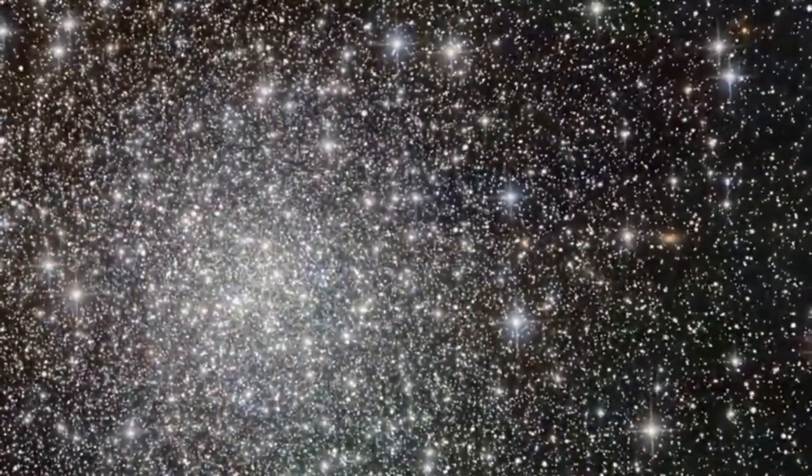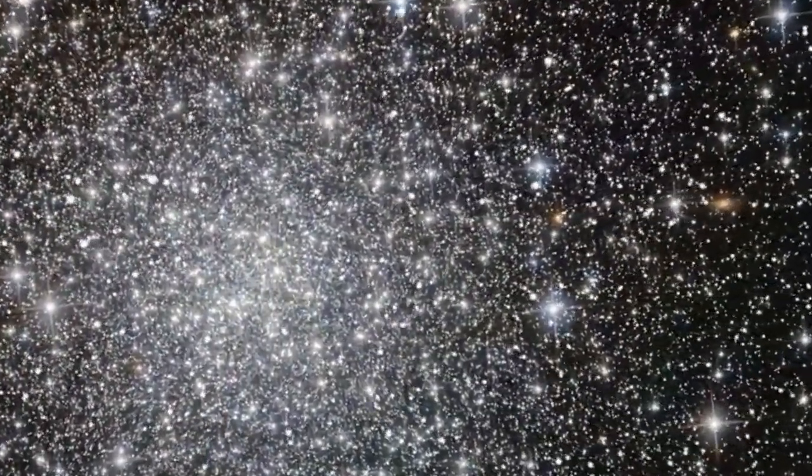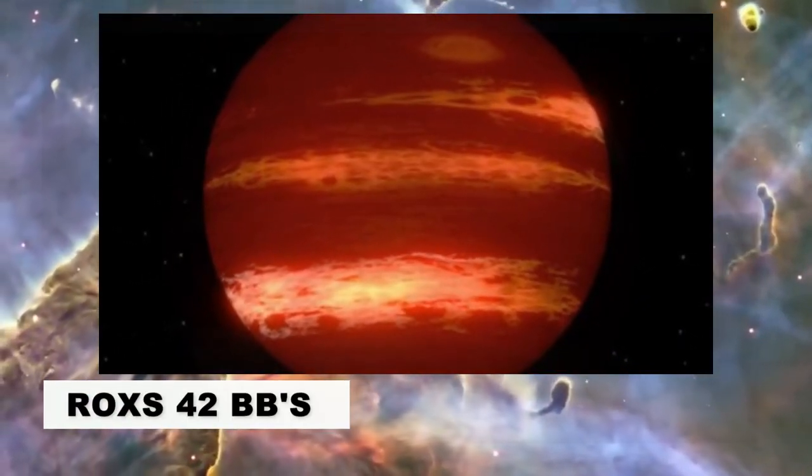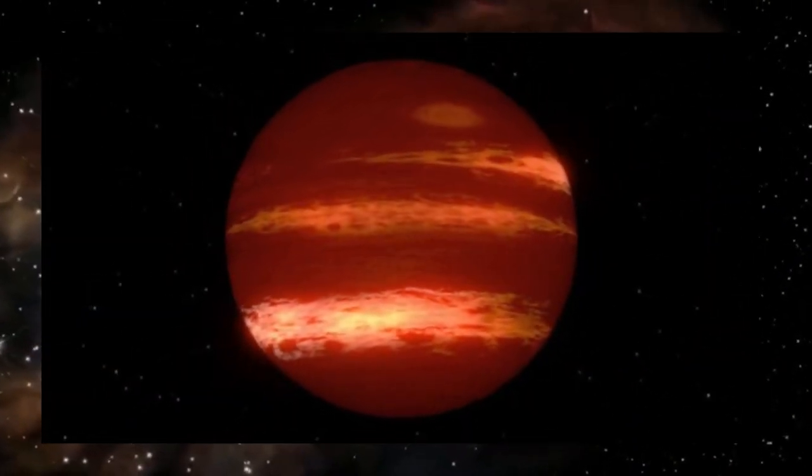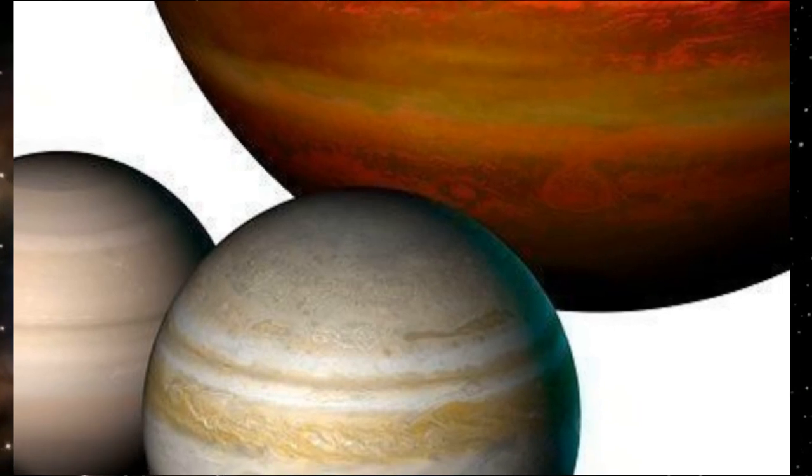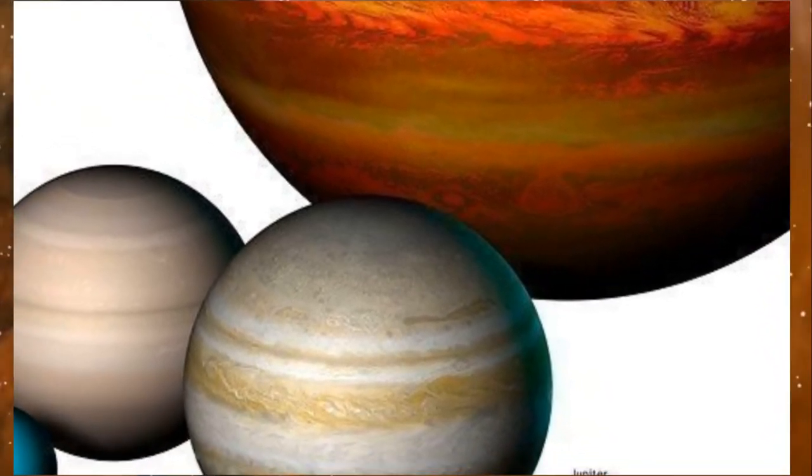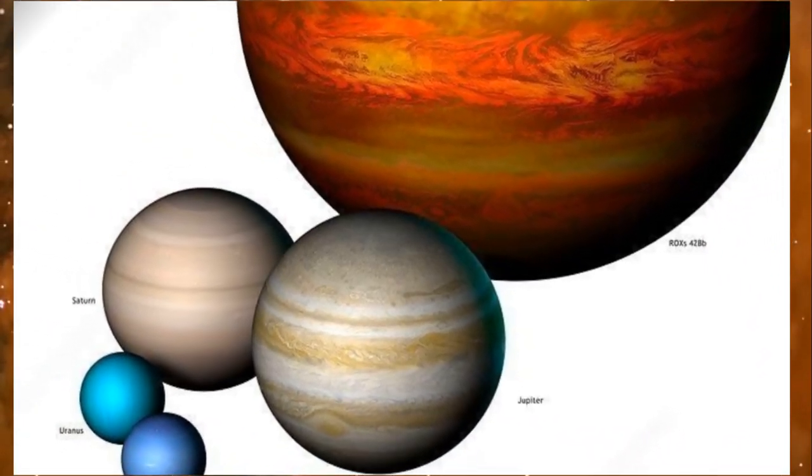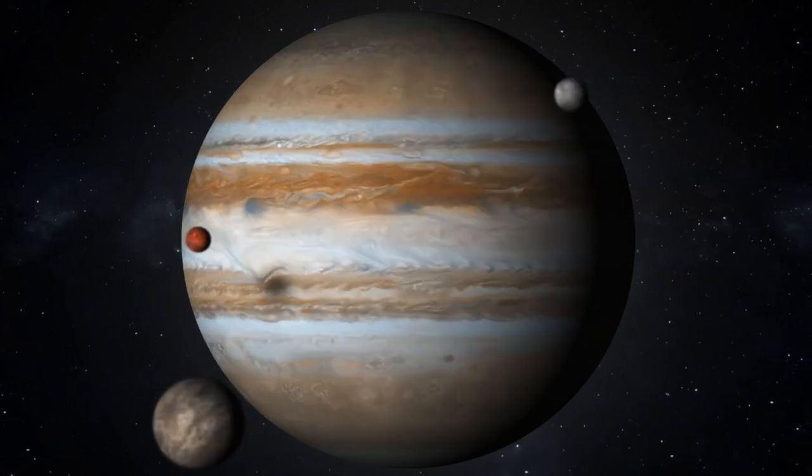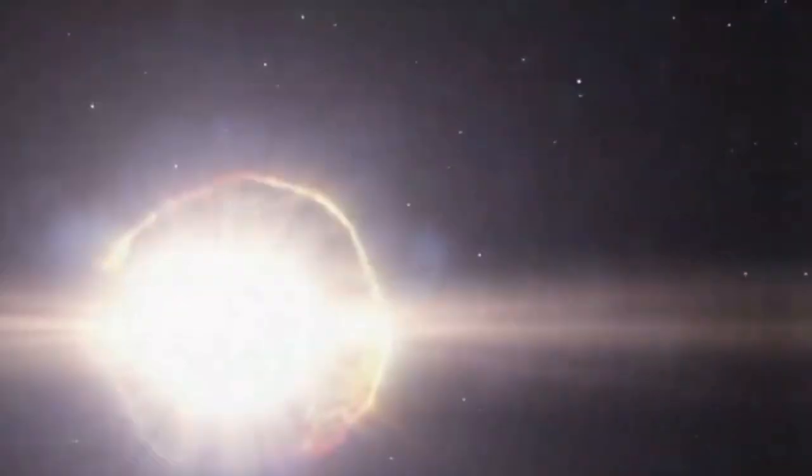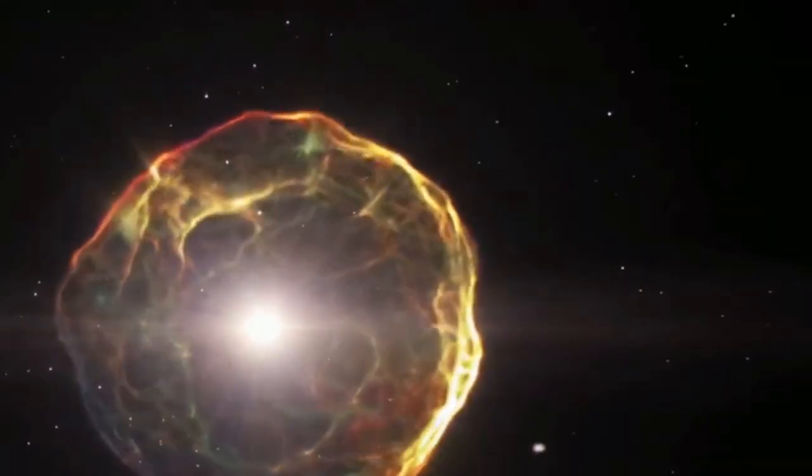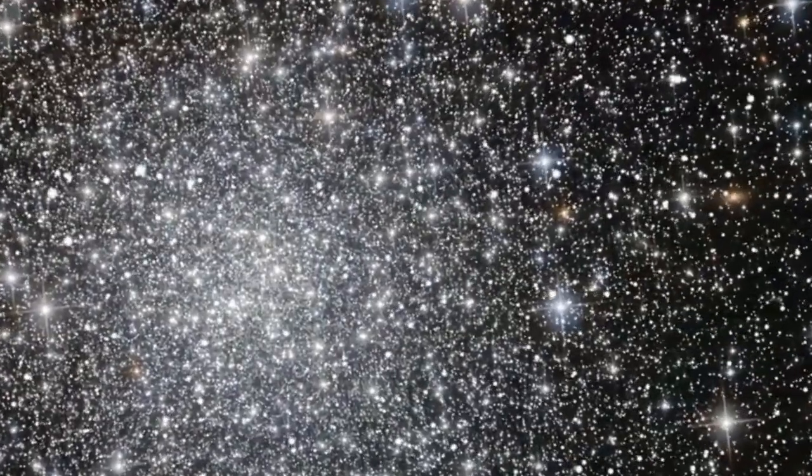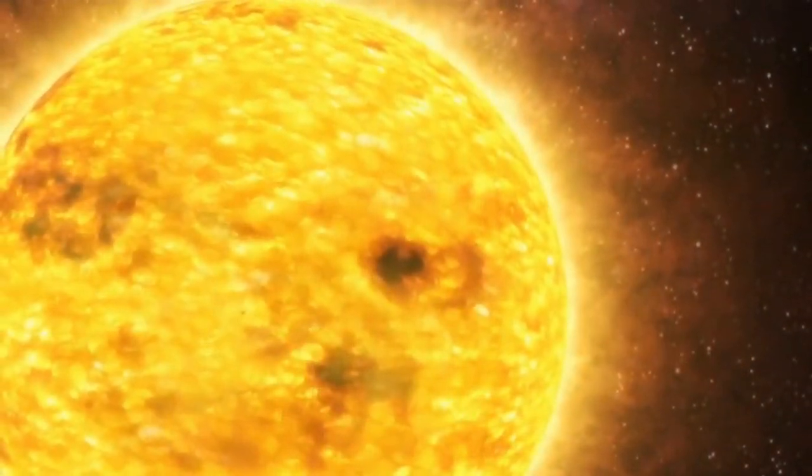Our understanding of the cosmos is improved by the ongoing challenge of new astronomical evidence to our hypotheses. What's ROX 42 Bb's diameter? The biggest planet in the cosmos may be 2.5 times larger than Jupiter. This huge planet was found in 2013 in the Ophiuchus cloud cluster. This planet is also known as Hot Jupiter. ROX 42 Bb has a short orbital period around its star.